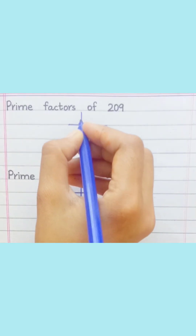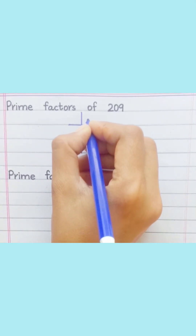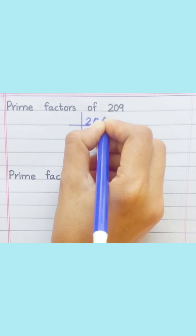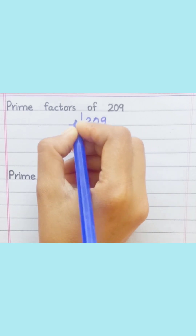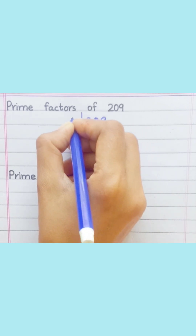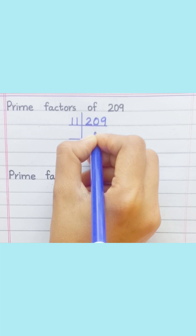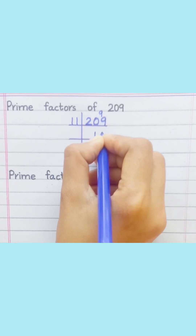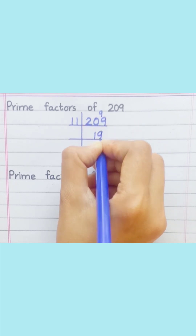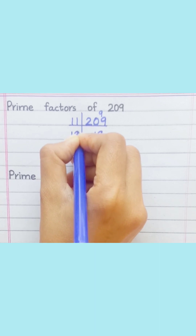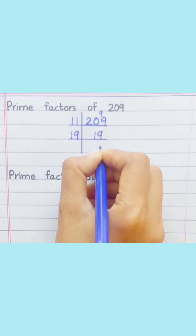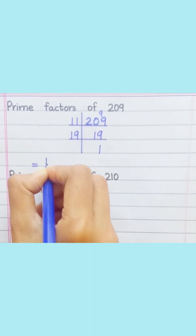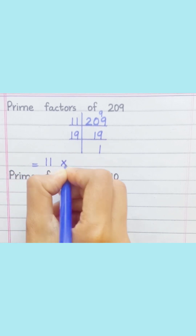Prime factors of 209. 11 ones are 11, 11 nines are 99, 19 ones are 19. Equal 11 multiplied by 19.